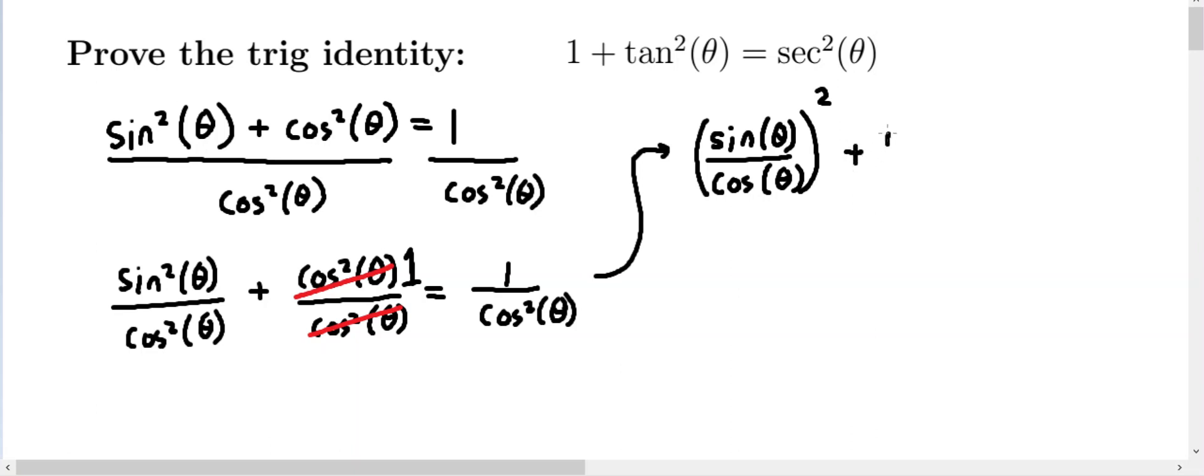Now, the plus 1 equals, similarly to what we had before, instead of 1 over cosine squared theta, we'll recognize that this is also 1 squared over cosine squared theta. So we can rewrite this as 1 over cosine of theta quantity squared.